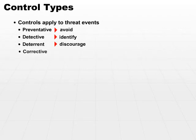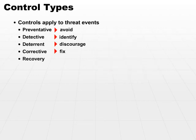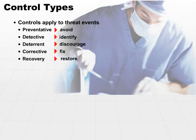There are also corrective controls. A corrective control's purpose is to fix or repair the effects of an event. Very similar to corrective controls are recovery controls. A recovery control is used to restore the state of a system or object to a known point in time prior to a threat event.